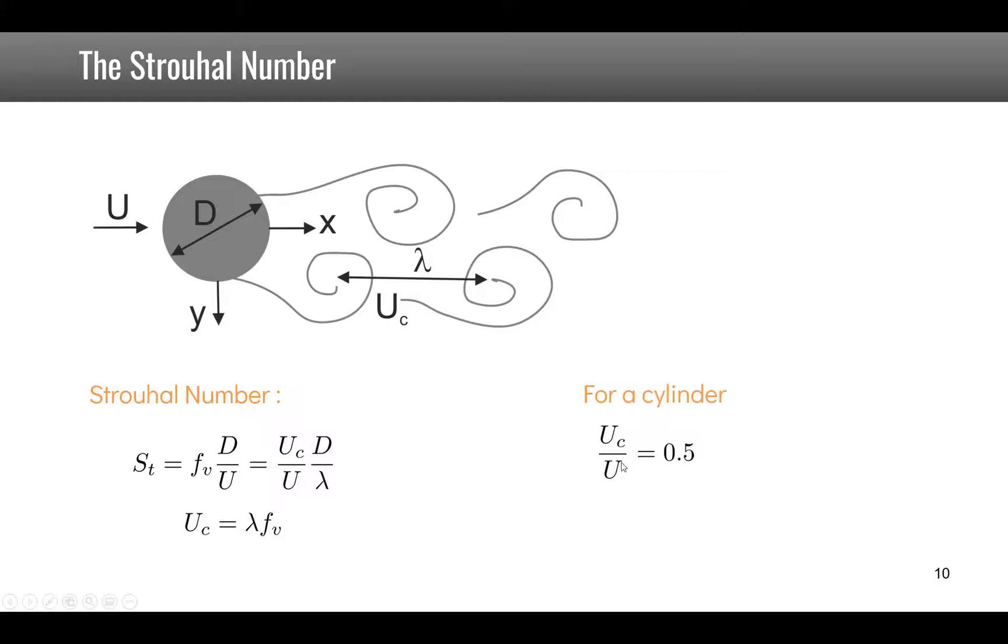In a cylinder uc over U is 0.5, d over lambda is 0.4, and so we know that the Strouhal number is equal to 0.2.